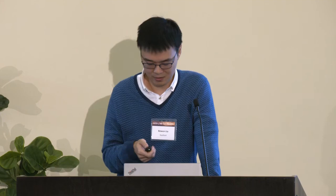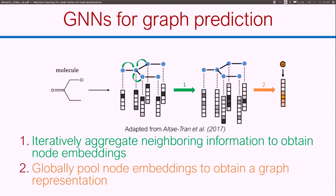I'm going to briefly go over graph neural networks for graph classification. These are neural network models that operate on graph-structured data. For graph prediction, they operate in two steps. First, you perform a message passing step where each node receives information from its neighbors and then updates its own state. After a few series of this message passing, you obtain updated node embeddings that summarize the local neighborhood. Then you pool together these node embeddings to obtain your final representation that summarizes your overall graph structure.